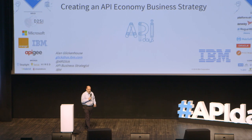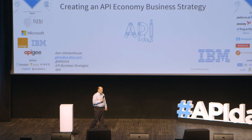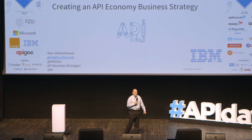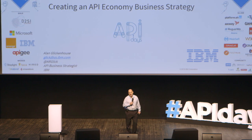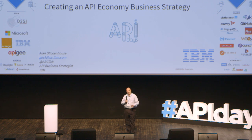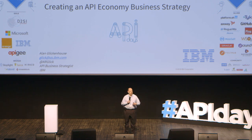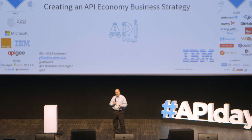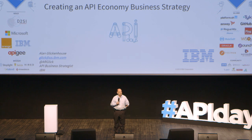Good morning. My name is Alan Glickenhaus. I am the API business strategist for IBM. That role is very interesting — I get to go out and meet with businesses of all different industries and all different sizes, and I speak to them about what APIs can do for their business.